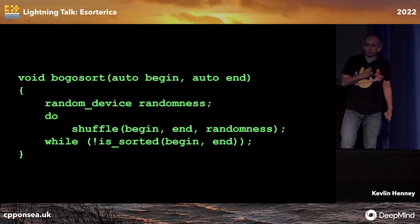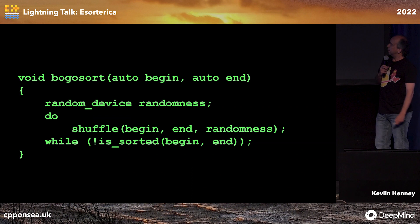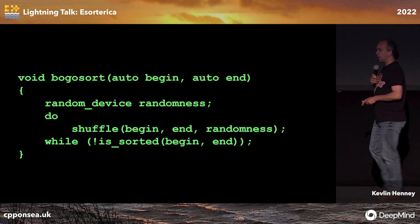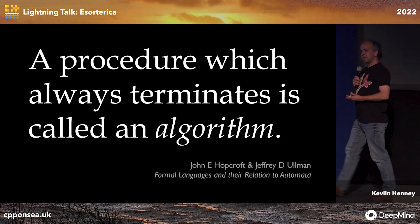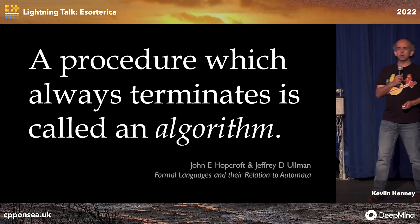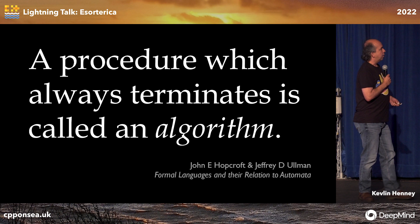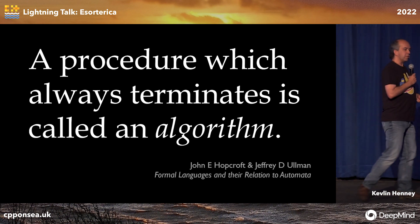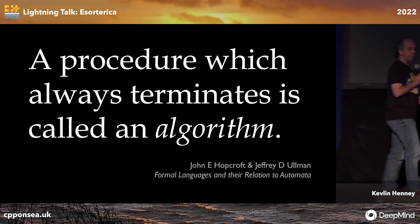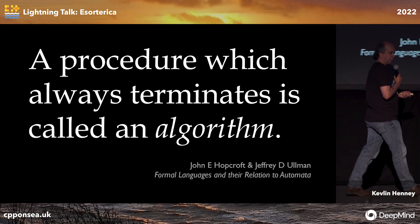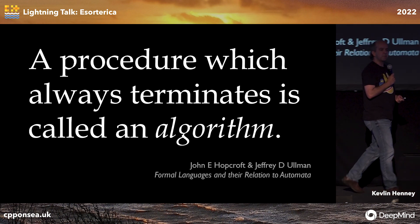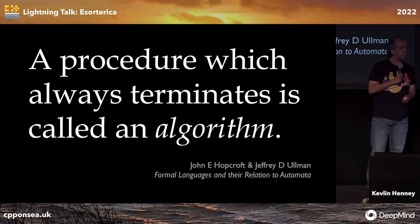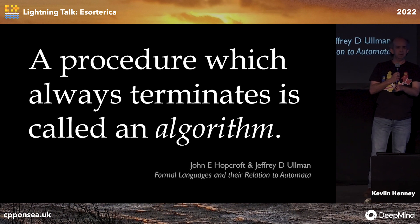Let's do this right. We've also got an interesting thing here, because technically speaking, that's not an algorithm. By definition, an algorithm is something that terminates. There is no guarantee that bogosort actually terminates. The probability that it does so hugs zero so closely and intimately you'd be forgiven for thinking that they are equal — but it isn't zero. It's just close.